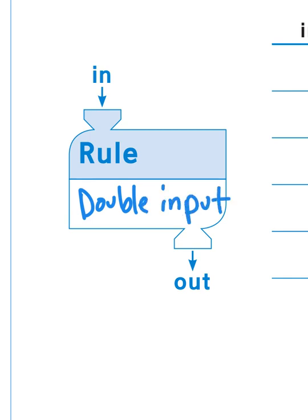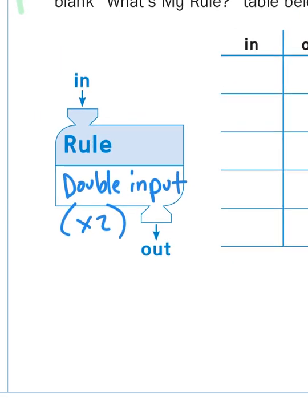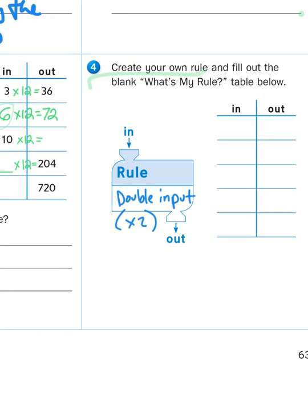When you double the input, that means you're just basically multiplying times 2. So whatever number is in the input, you double it. You can come up with whatever rule you want to. It's your rule to create. So have some fun with a little math creativity. You didn't know that math could be creative, did you? Well, you learn something new every day.